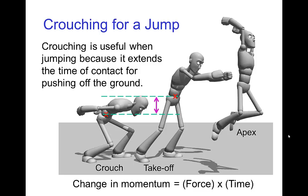When a character wants to jump as high as possible, they exert as much force as possible. But the more force they exert, the faster they go and the quicker they lose contact with the ground. It's only when a character is in contact with the ground that they are accelerating. Crouching is useful to jump as high as possible because it extends the time during which the character is in contact with the ground. The change in momentum is the product of the amount of force multiplied by the time that force is applied, so you want a large force over as much time as possible.